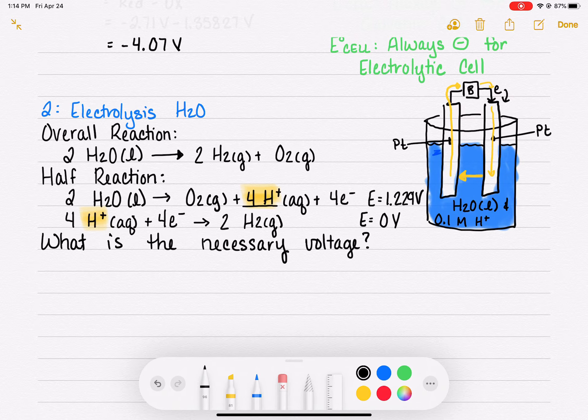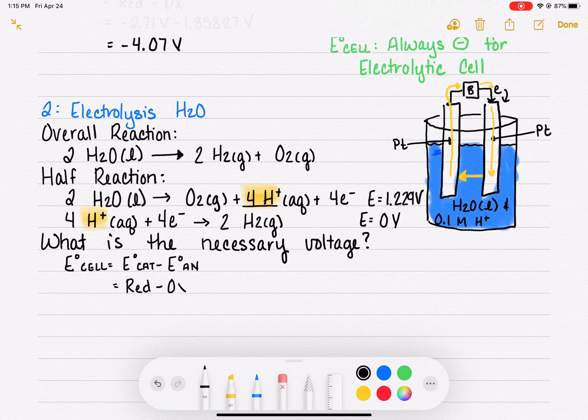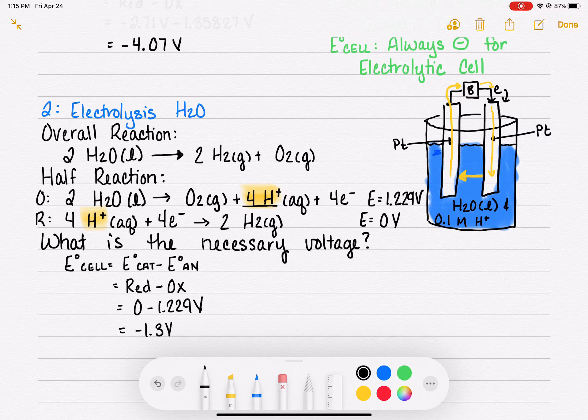To calculate the necessary voltage, first thing we have to do is look up the half reaction voltages and then we have to plug them correctly into E cell equals E cathode minus E anode, reduction minus oxidation. Oxidation is loss of electrons, reduction is gain of electrons. So zero minus 1.229 gives us negative 1.3 ish volts.